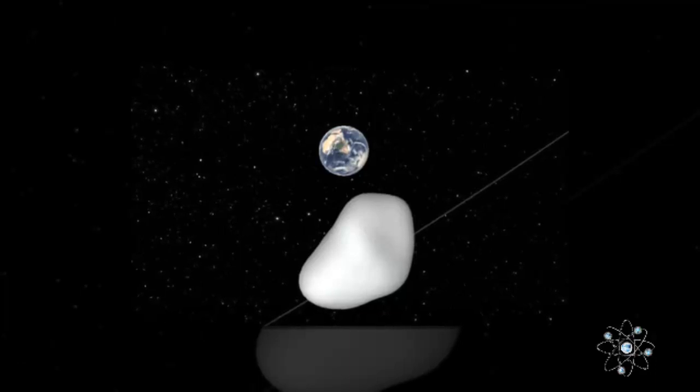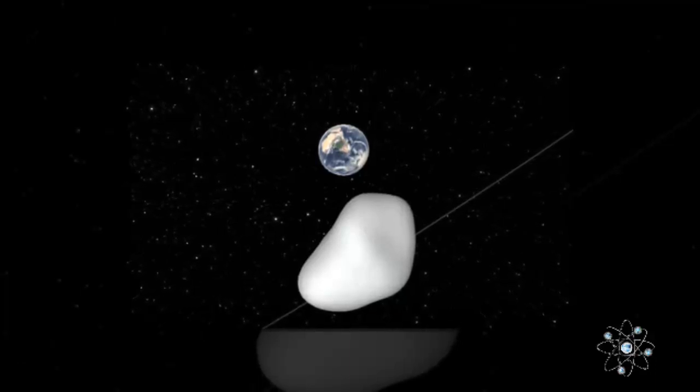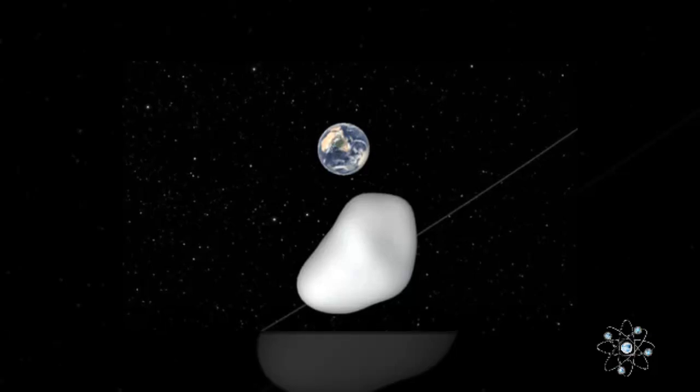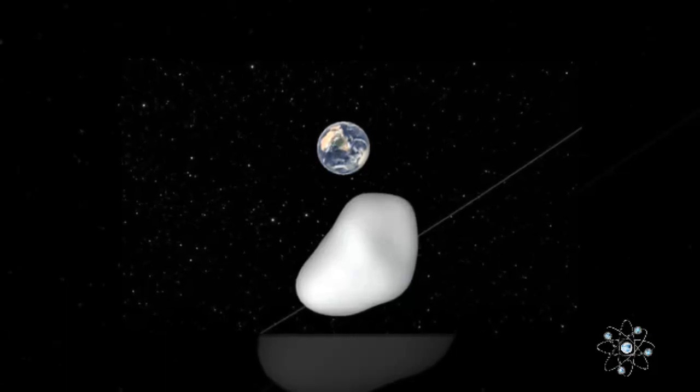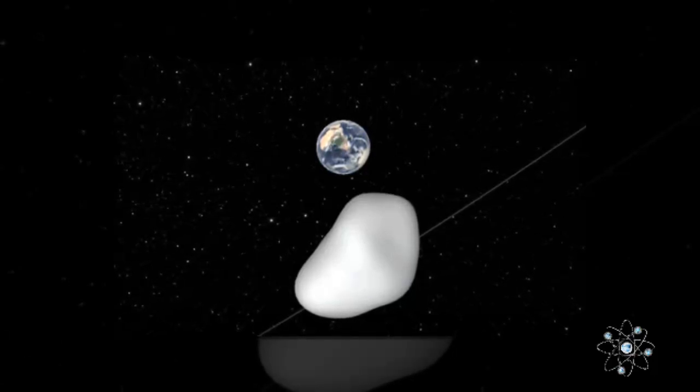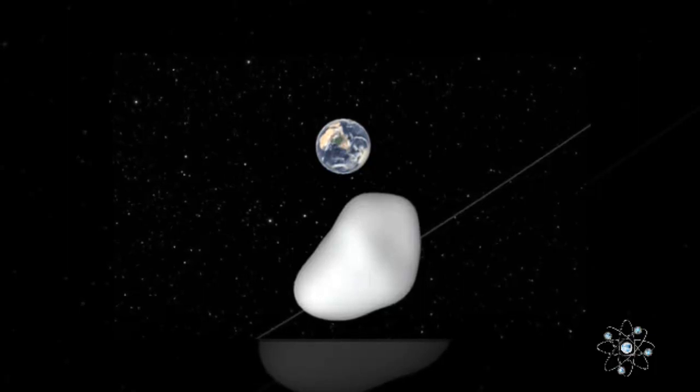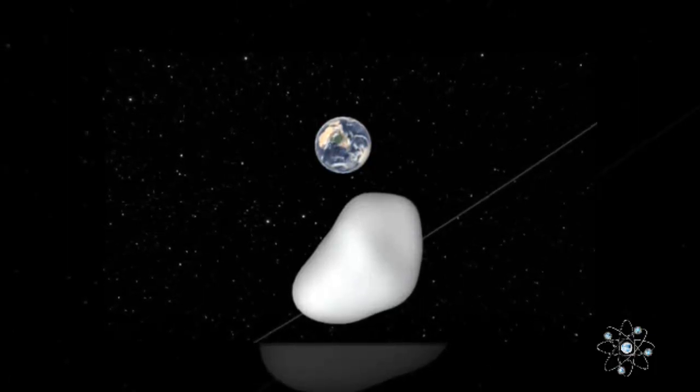On October 12, a 10-30-meter asteroid is set to make a close flyby of Earth. The asteroid, named 2012 TC4, will pass just 4,200 miles from Earth for the first time since it went out of range in 2012.